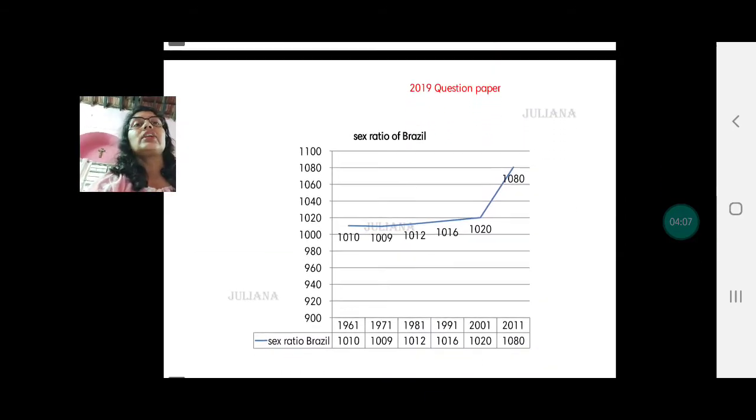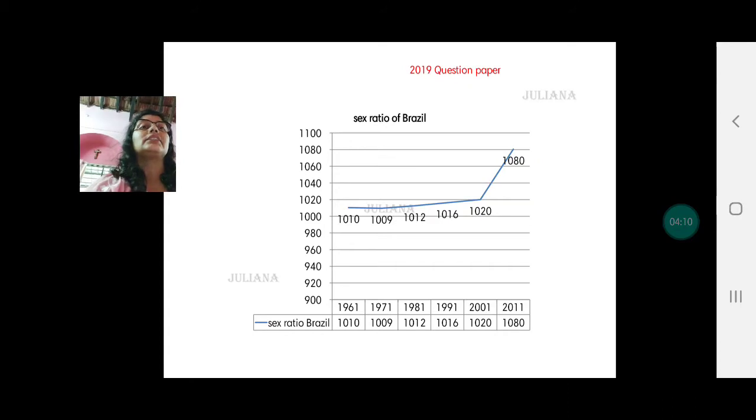The first characteristic or composition that we are talking about is the sex ratio. When you say sex ratio, it is a total number of females per thousand males. So for every thousand males, how many females are there? That is how we calculate the sex ratio. Now this is the sex ratio graph of Brazil. On the x-axis you have the years 1961, 71, 81, 91, 2001 and 2011.